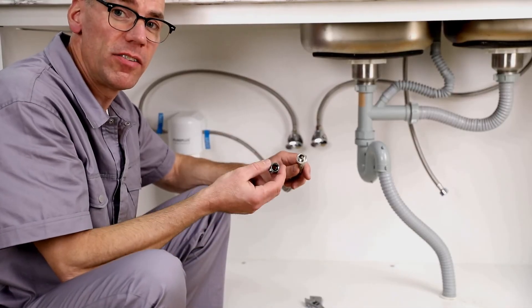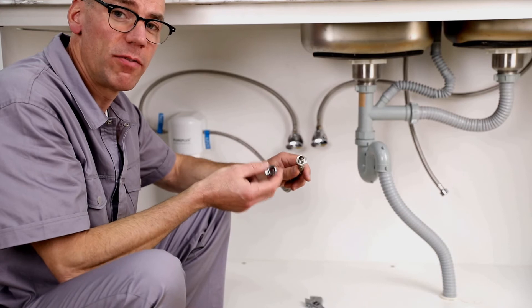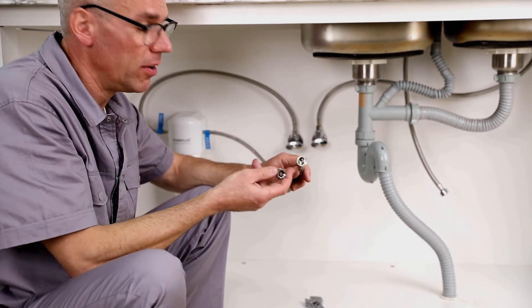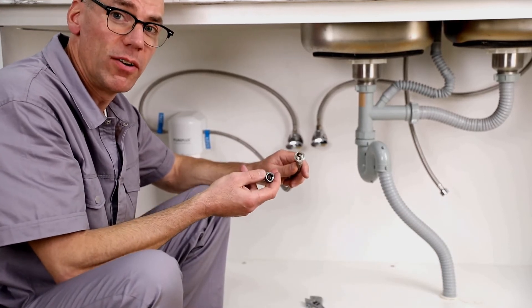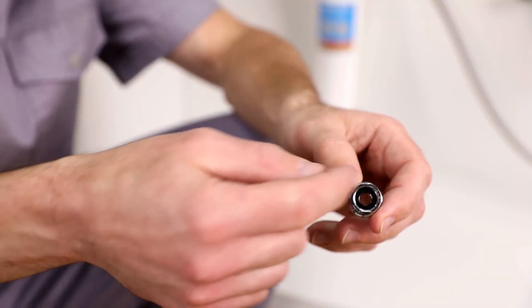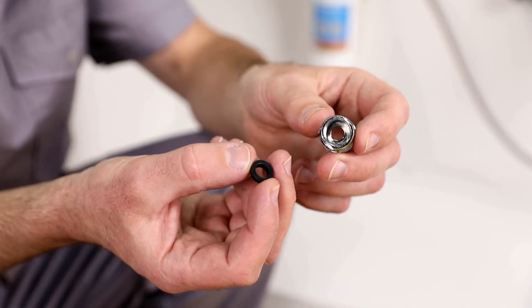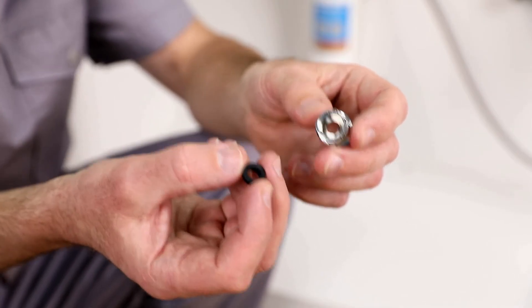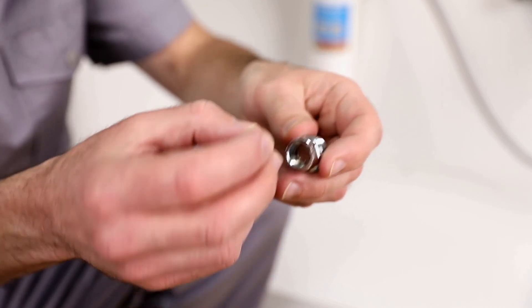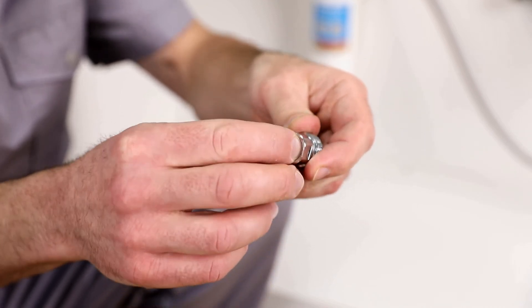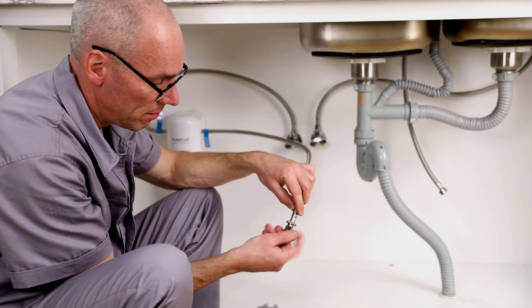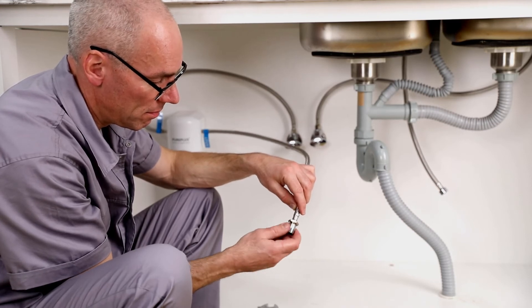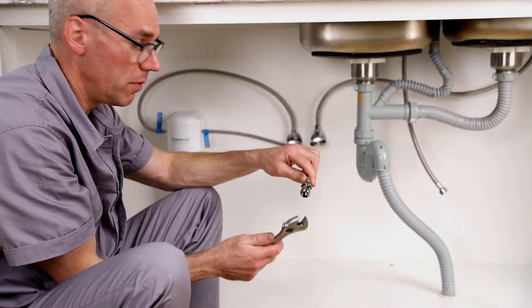Next, attach the 3/8 inch compression to 1/2 inch FIP adapter to the water filtration system's outlet hose. Make sure the O-ring is in position. If the O-ring is separated from the connector, place the flat side of the O-ring against the connector. And tighten it with the adjustable wrench.